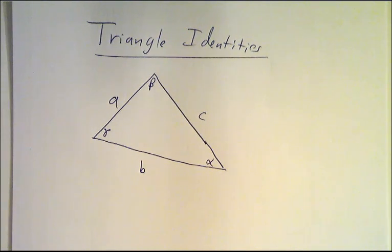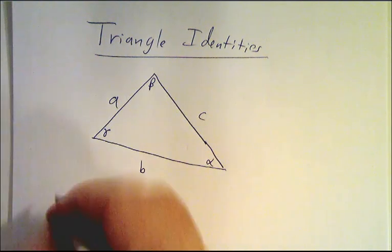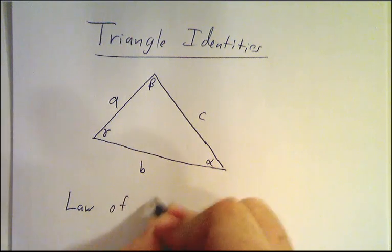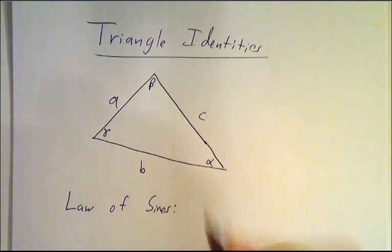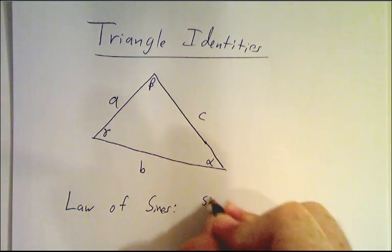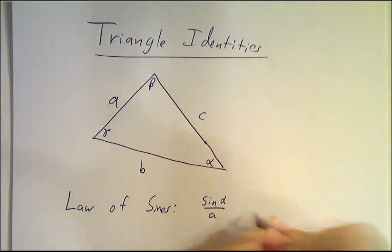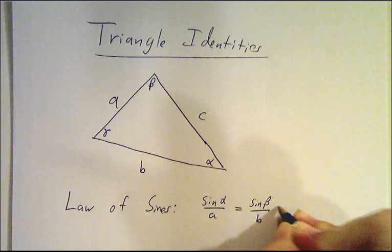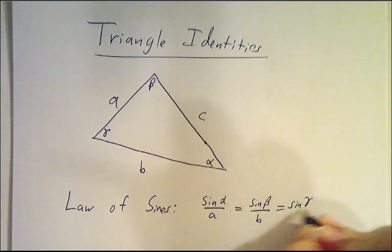So the two important identities about this are the law of sines and the law of cosines. The law of sines says that sin alpha divided by A is the same thing as sin beta divided by B, is the same thing as sin gamma divided by C.